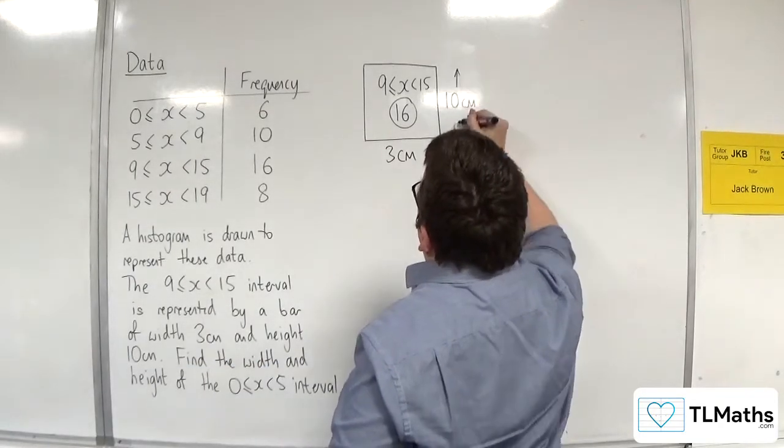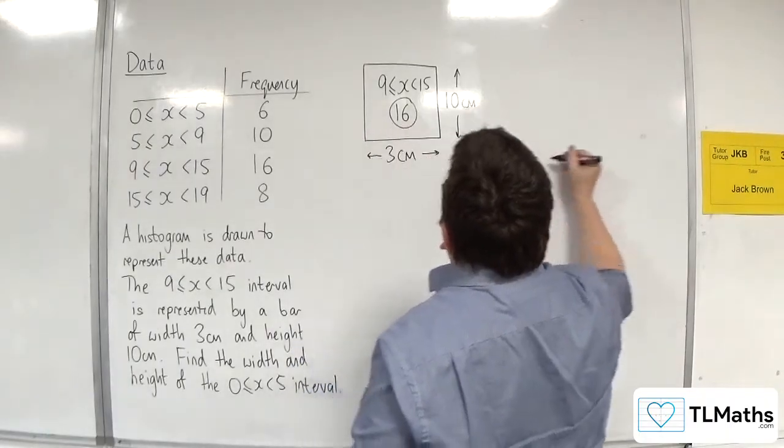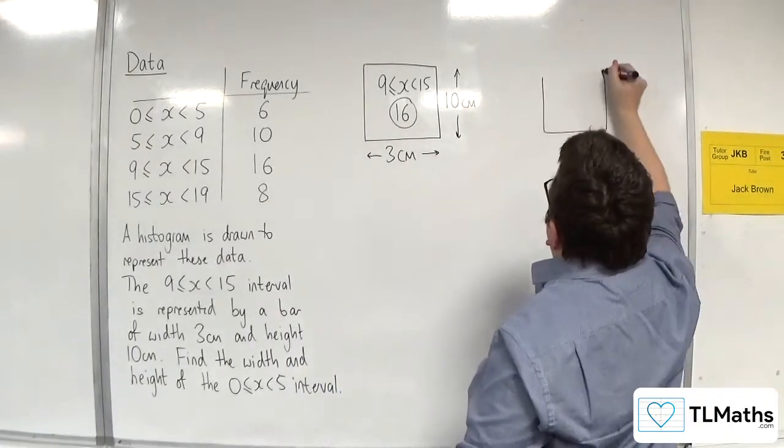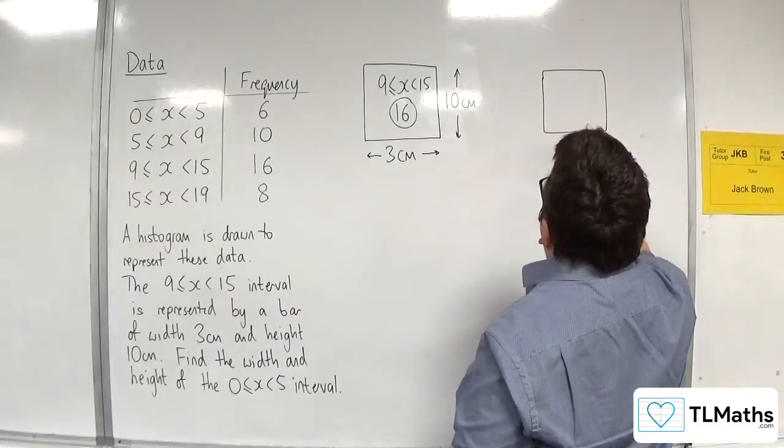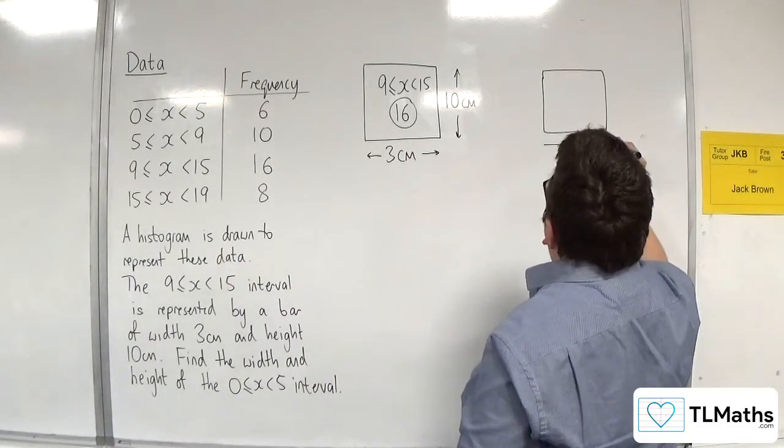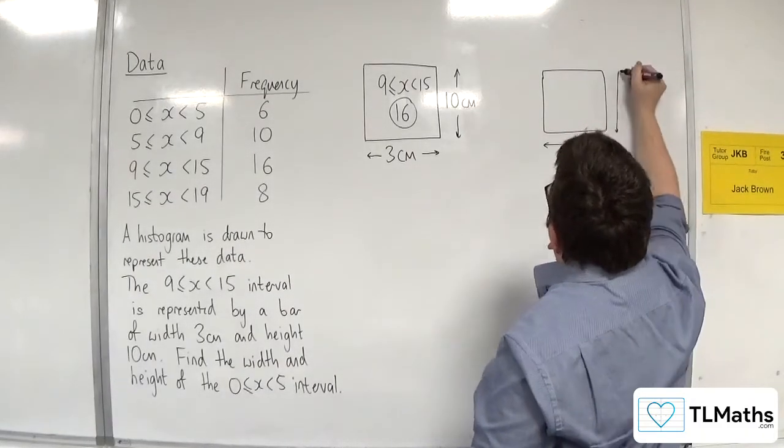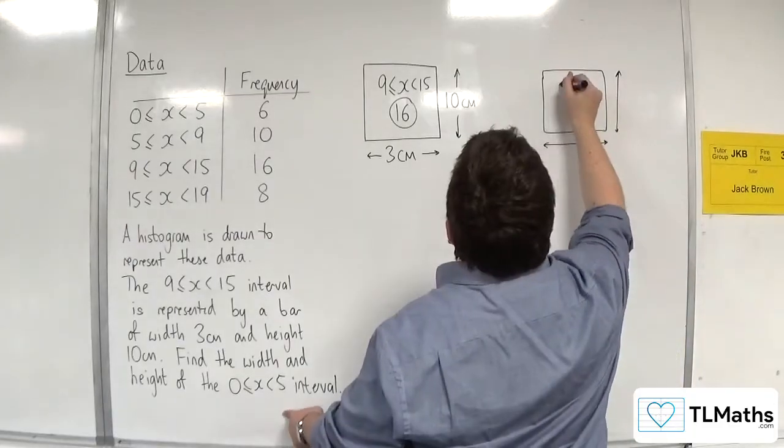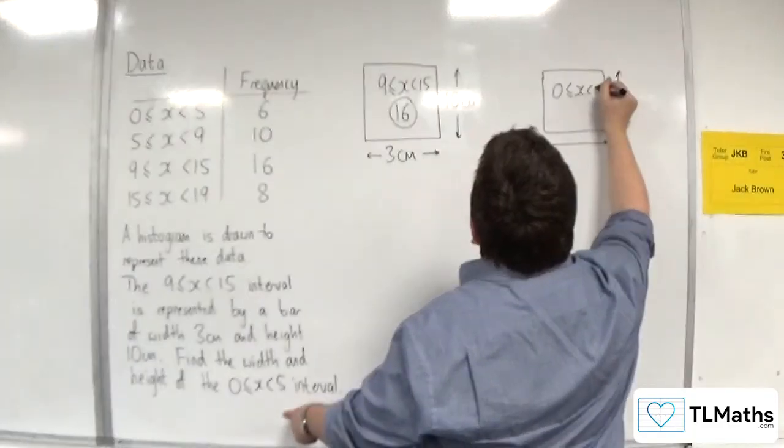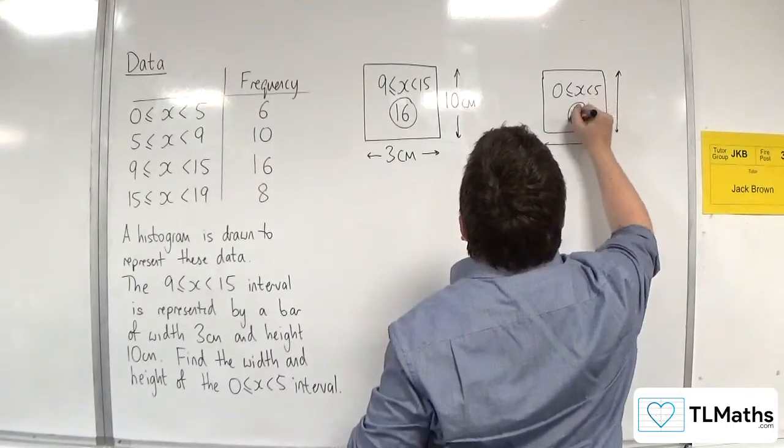Okay, so that's what we know. And what we need is we need to know the width and height of this other bar for the 0 to 5 interval, which has 6 as its frequency.